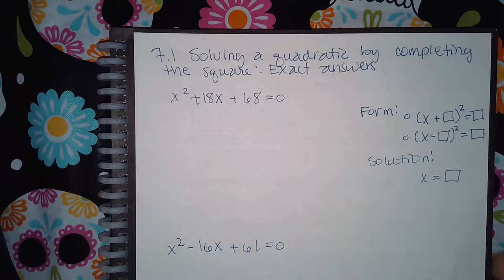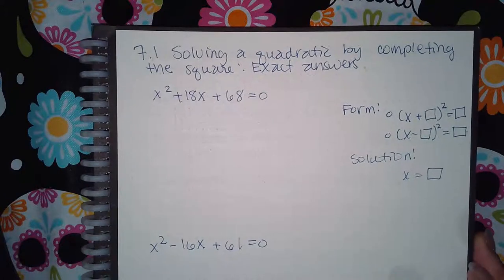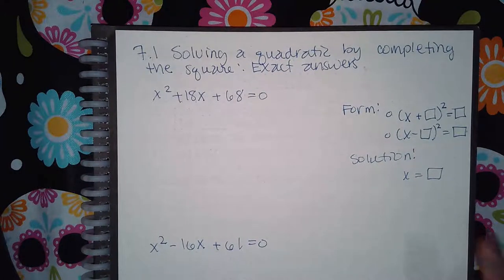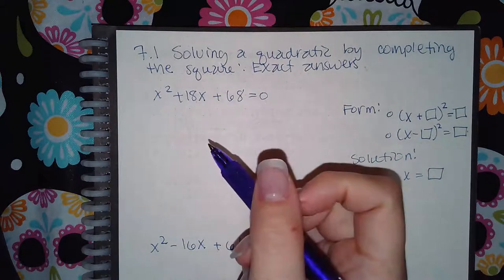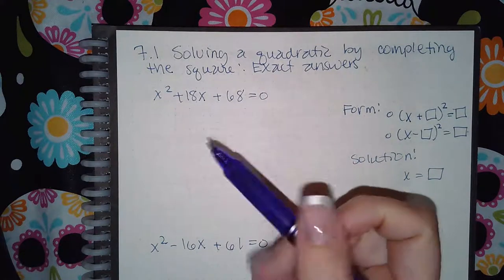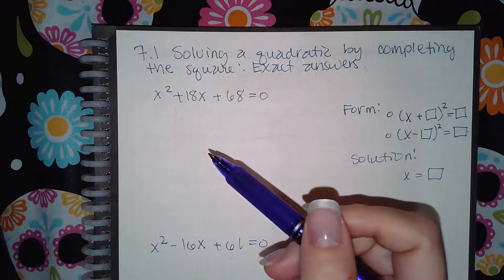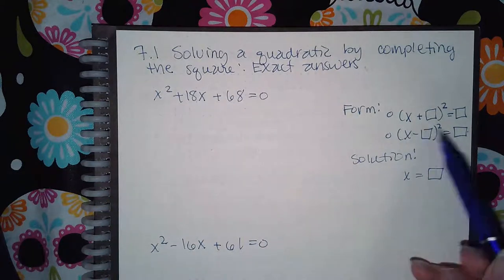Here we have solving a quadratic by completing the square, exact answers. So the first thing we have to do is figure out what we need to add in order to complete the square, then we have to actually factor it to complete the square, and they want us to type it in there what we got after we factored.